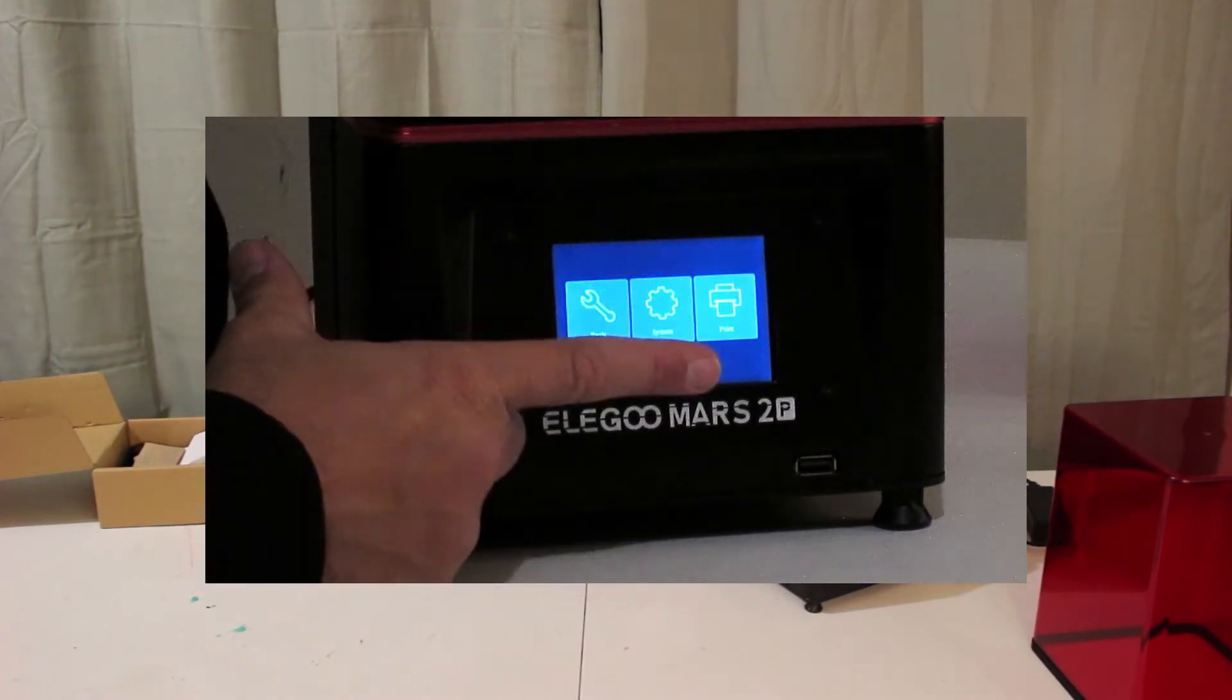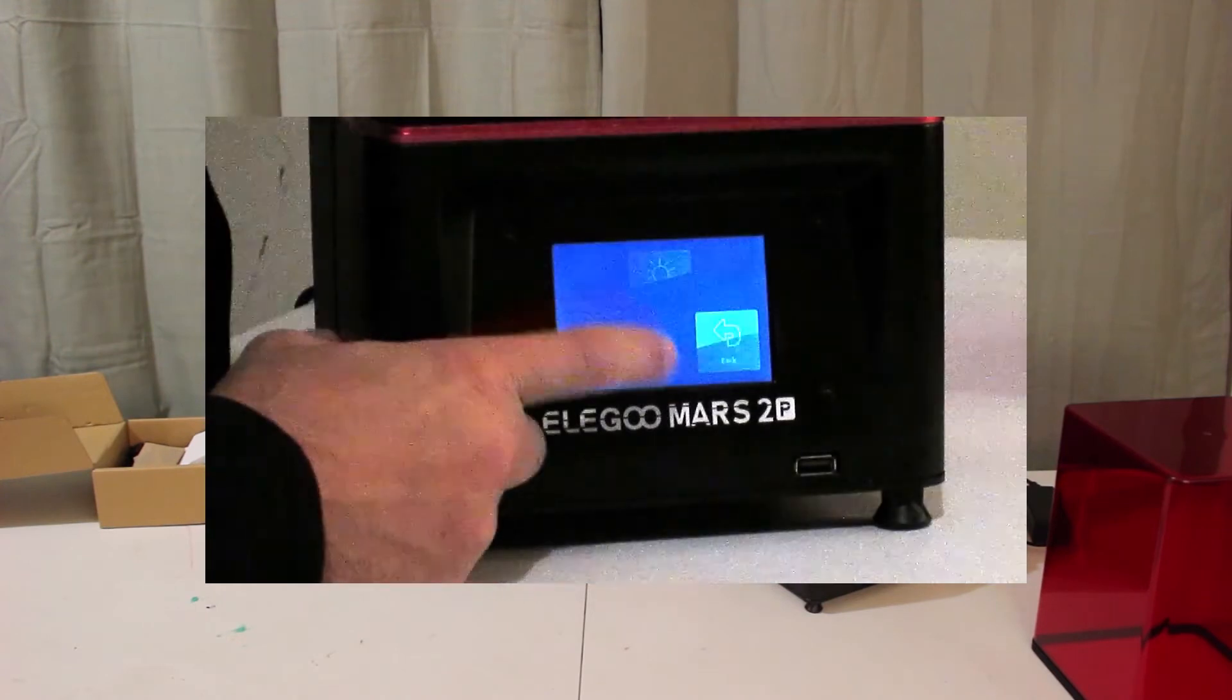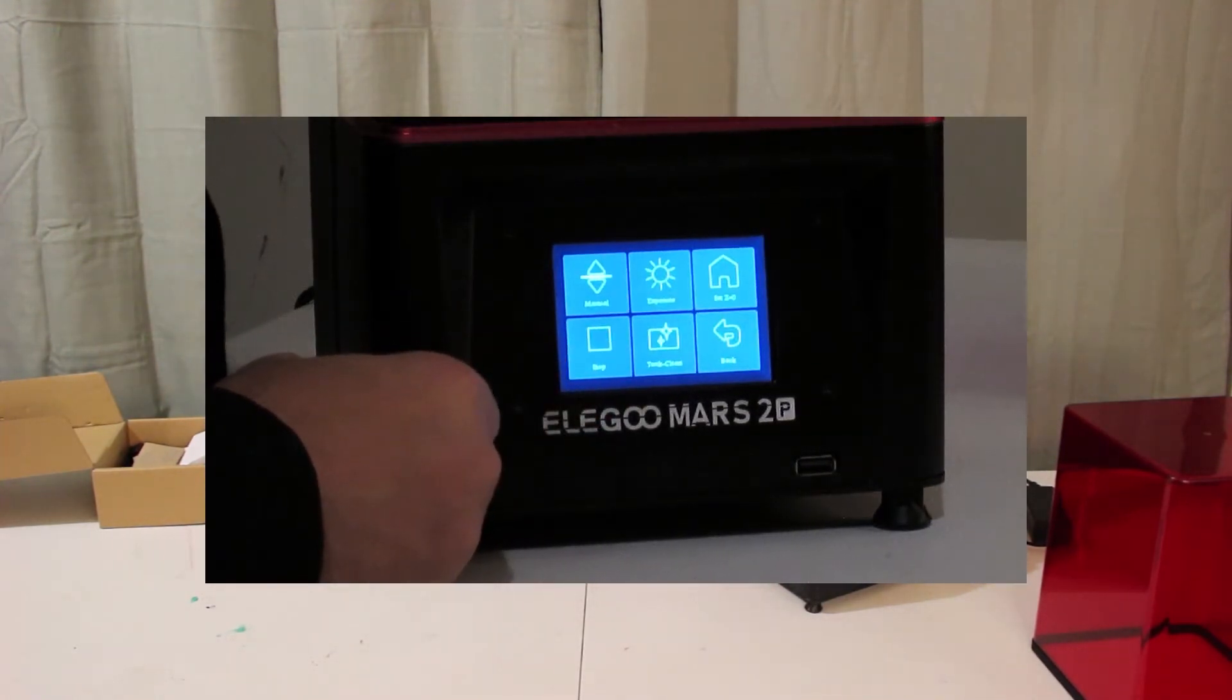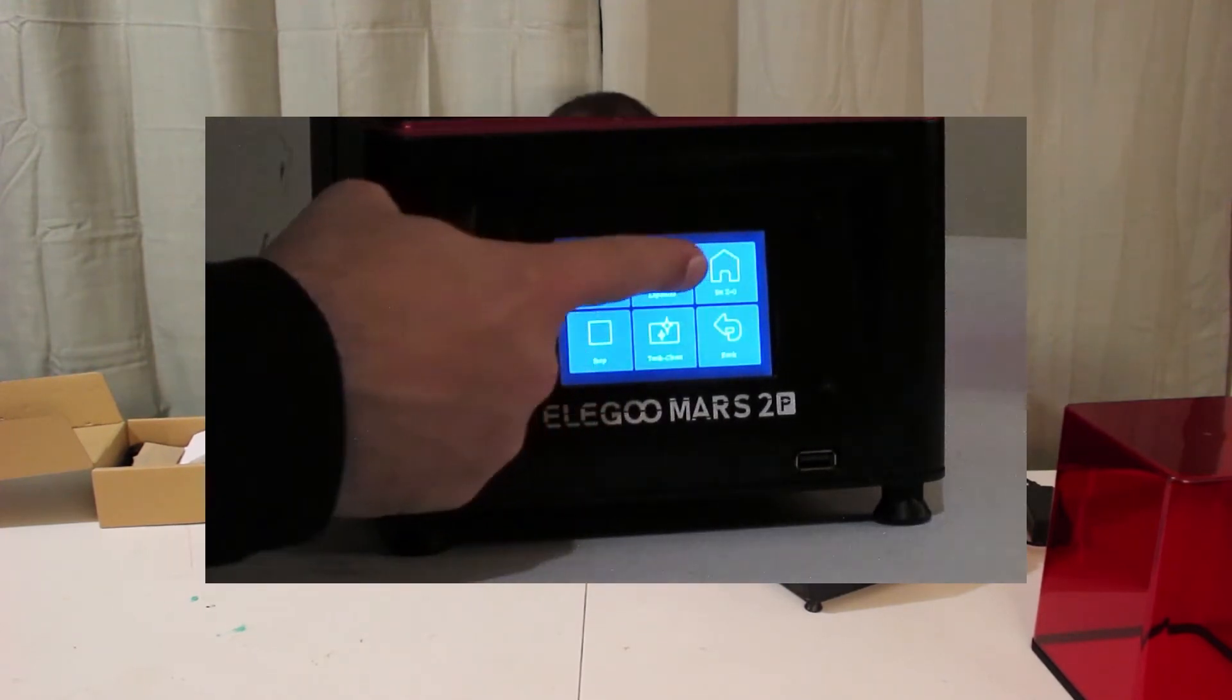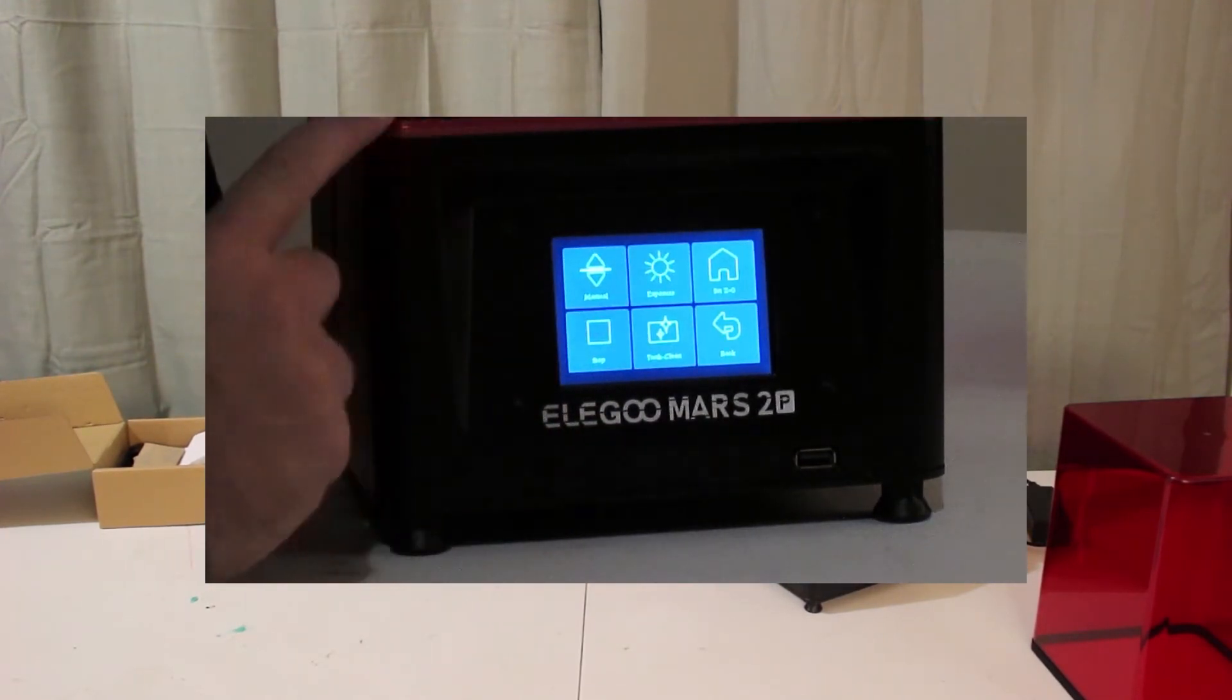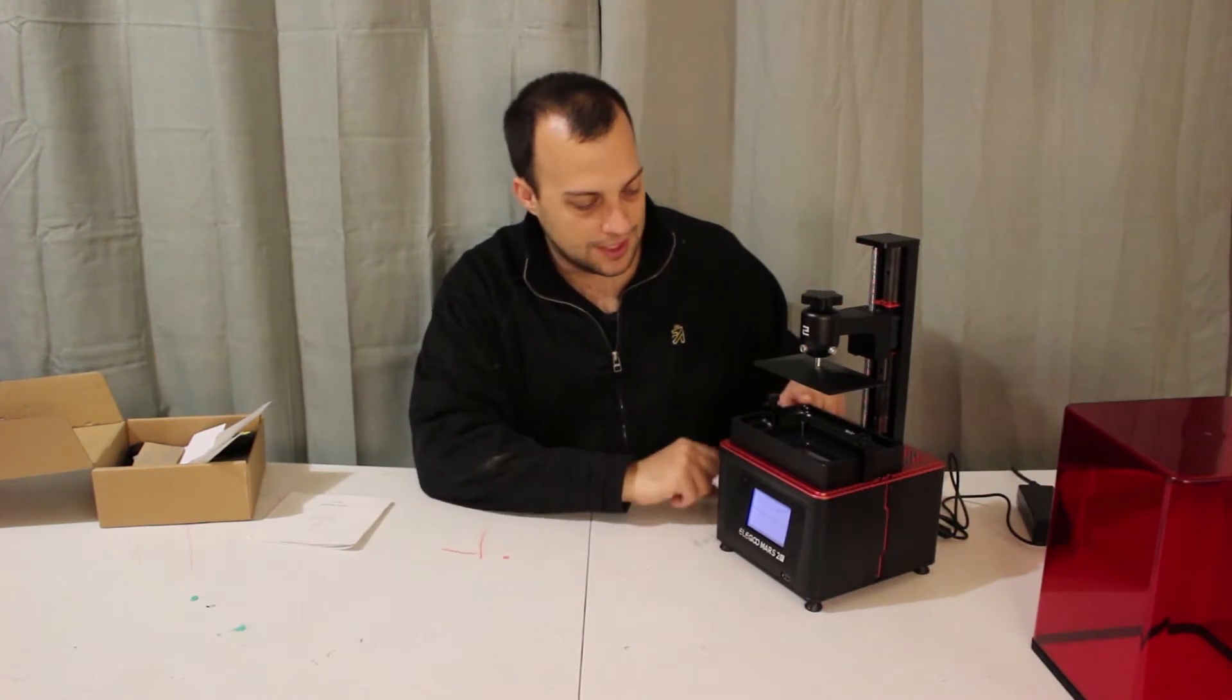We can go ahead and click on tools, and what we want to do is we're going to set the Z axis. Before we set the Z axis over here, we're going to go ahead and remove the resin tank.